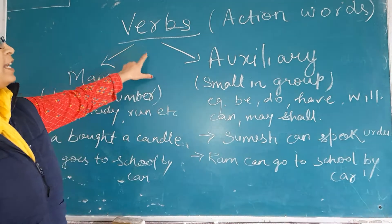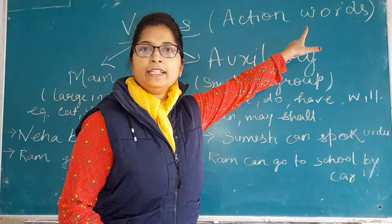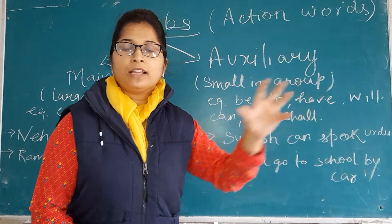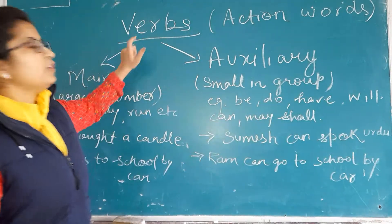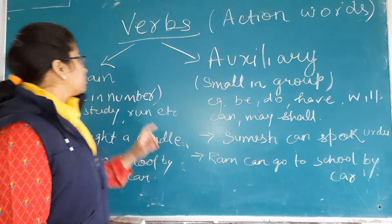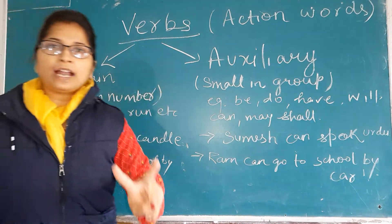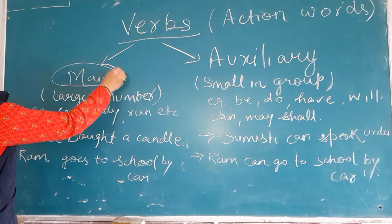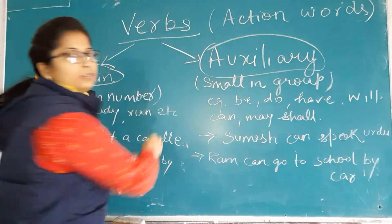So basically the verbs are the action words. Wo jo noun ka jo bhi action hai — the action performed by the noun is known as verb. Next, verb has been categorized into two categories: the first one is main verb, and the second one is auxiliary verbs.